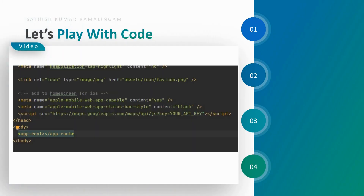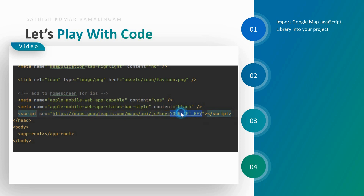First of all, we need to import the Google Maps JavaScript library into your index.html file. Don't forget to mention your API key inside the script section.